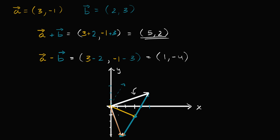That magenta vector is a plus b. So hopefully that makes sense. Given the components: if you're adding the vectors, add the corresponding components. If you're subtracting — if you're subtracting b from a — subtract b's corresponding components from the corresponding components of a.